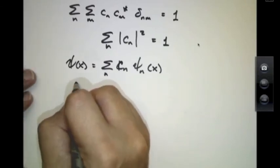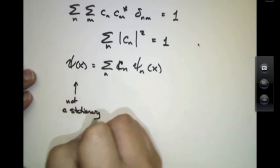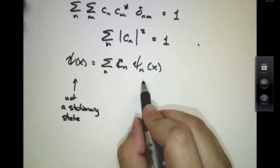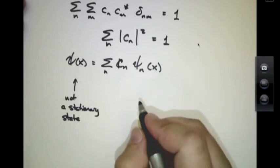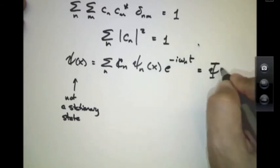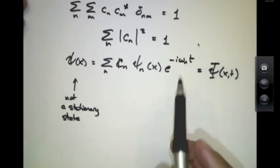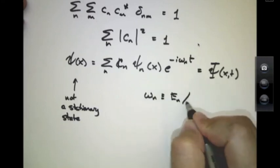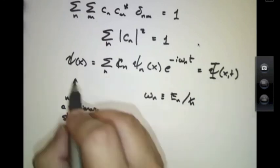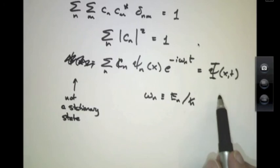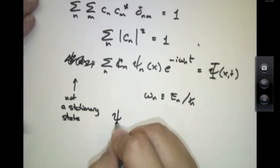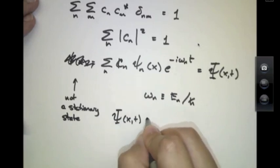Now I have to point out that this thing is not a stationary state, whereas these things are stationary states. These things correspond to states of definite energy. So in fact, what I probably should write is little e to the minus iωnt, and because these ωn's are the energy eigenvalues divided by ℏ, this superposition state Ψ, notice I'm writing capital Ψ now, does not correspond to a state of definite energy anymore and therefore it no longer satisfies the definition of what an eigenstate is. It's not a stationary state.